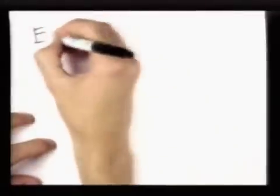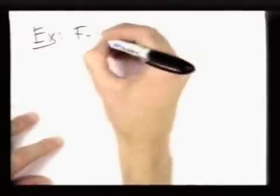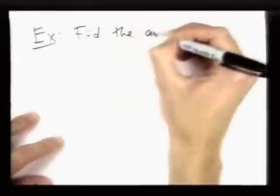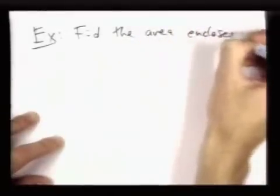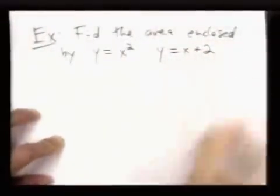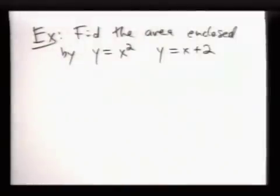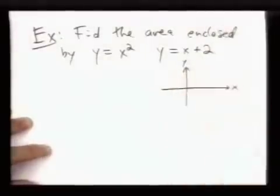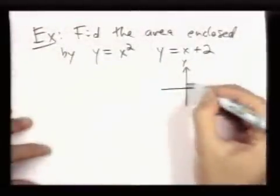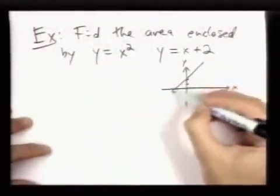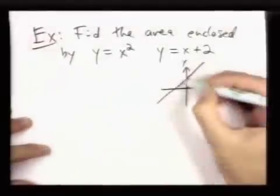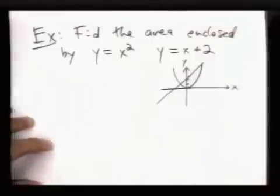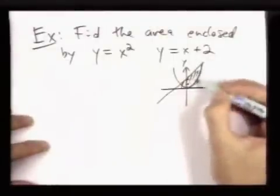So let me give an example. So suppose we want to find the area enclosed by the curves, y equals x squared and y equals x plus 2. Let me draw this region. So the line y equals x plus 2 starts at 2 and has a slope of 1. And y equals x squared is this parabola. And we're finding this area.